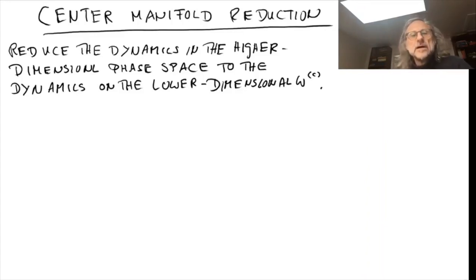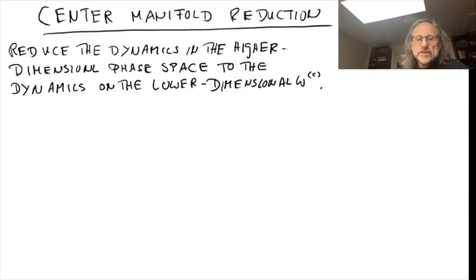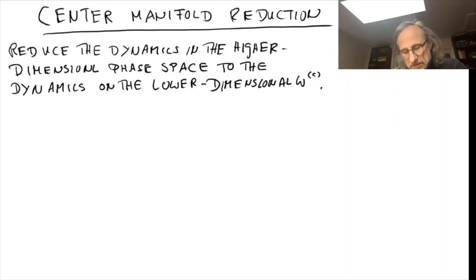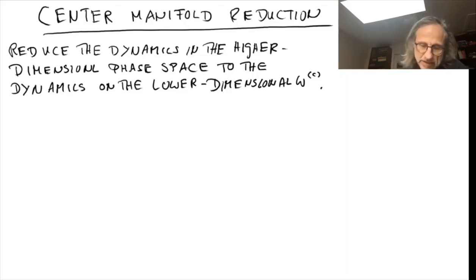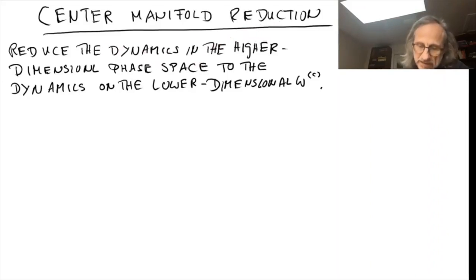We now have a higher dimensional system and we consider systems in which there's a bifurcation. From our previous investigations, we figured that bifurcations actually occur in a lower dimension. What we'd really like to do is reduce the dynamics in this higher dimensional phase space to the dynamics on the lower dimensional center manifold. So that's the goal.